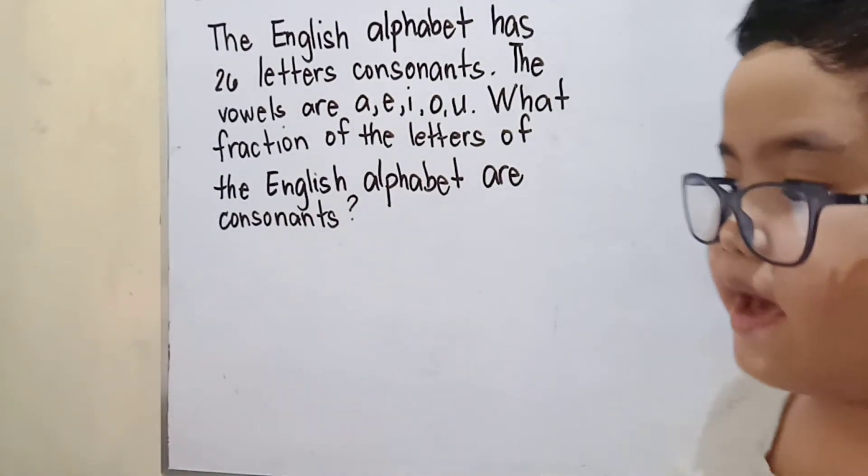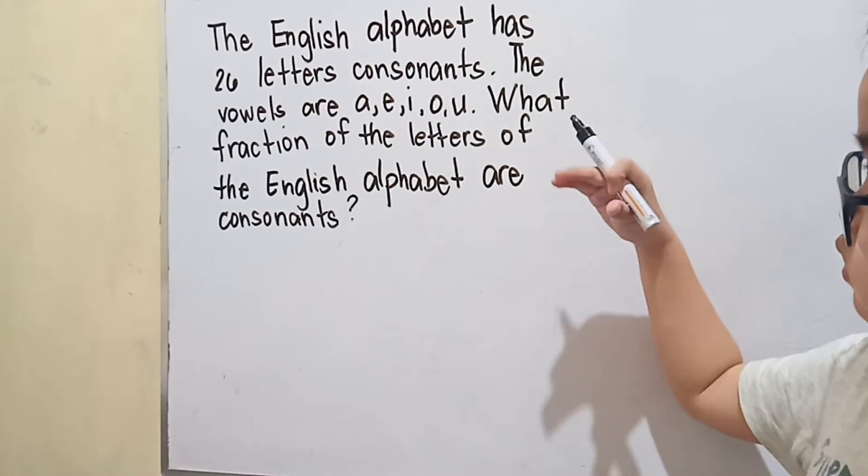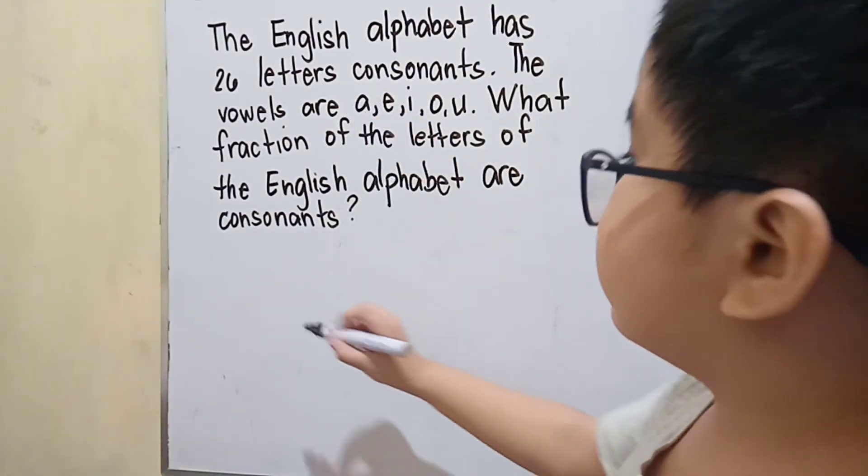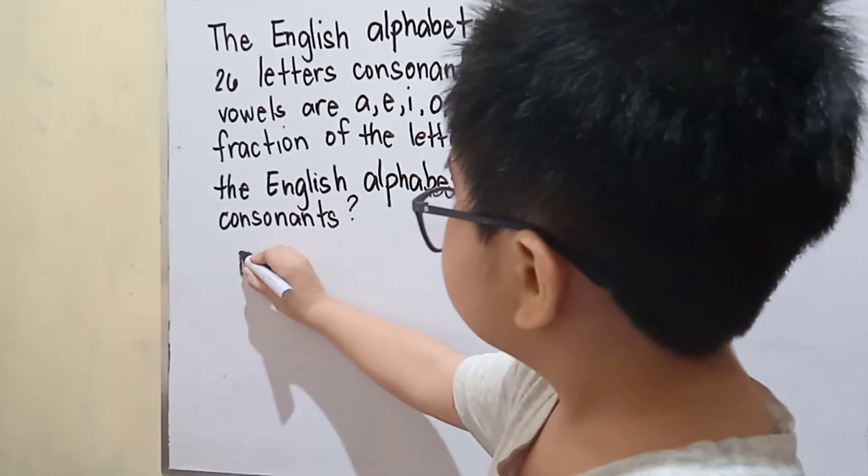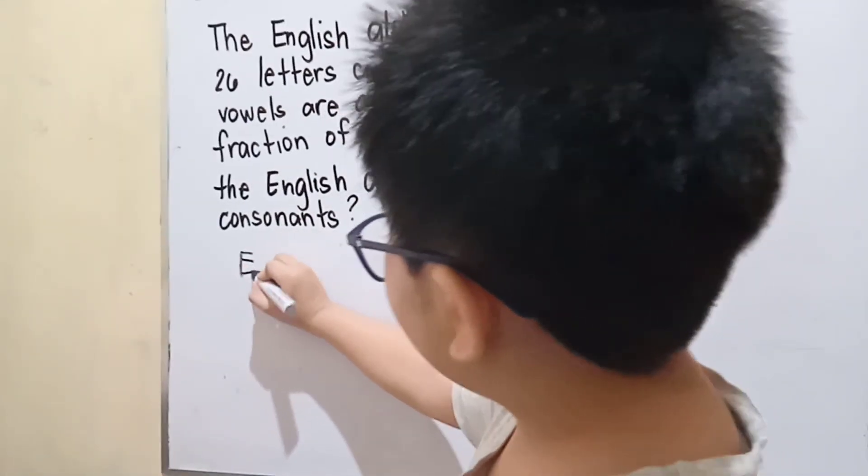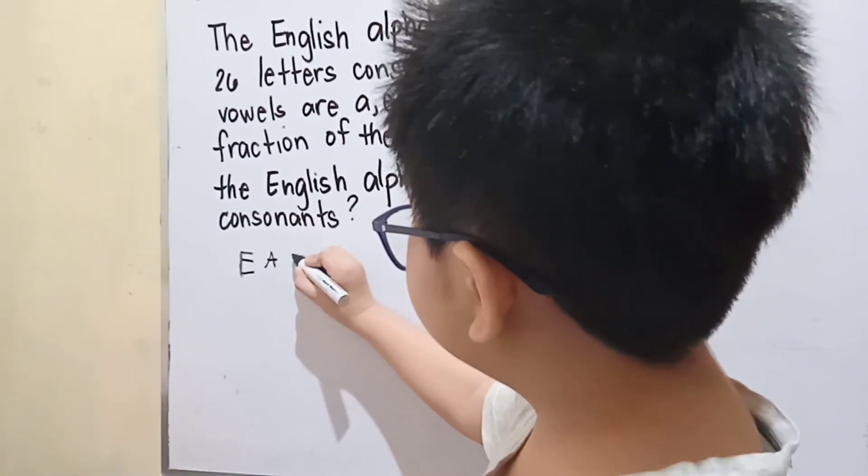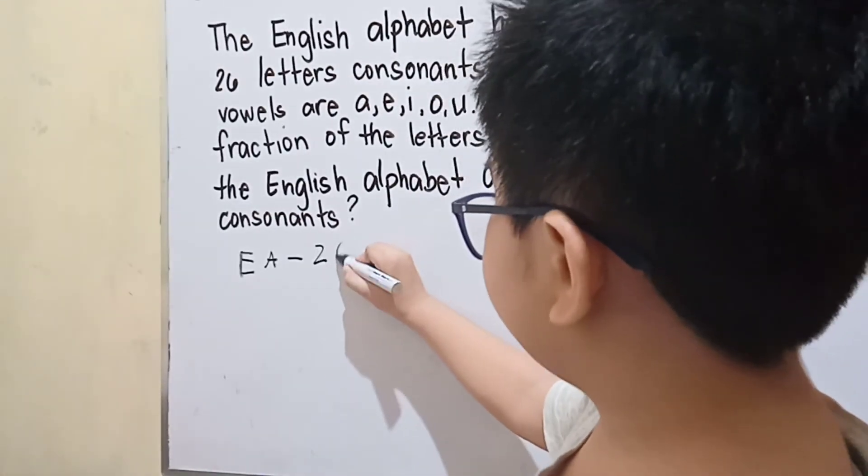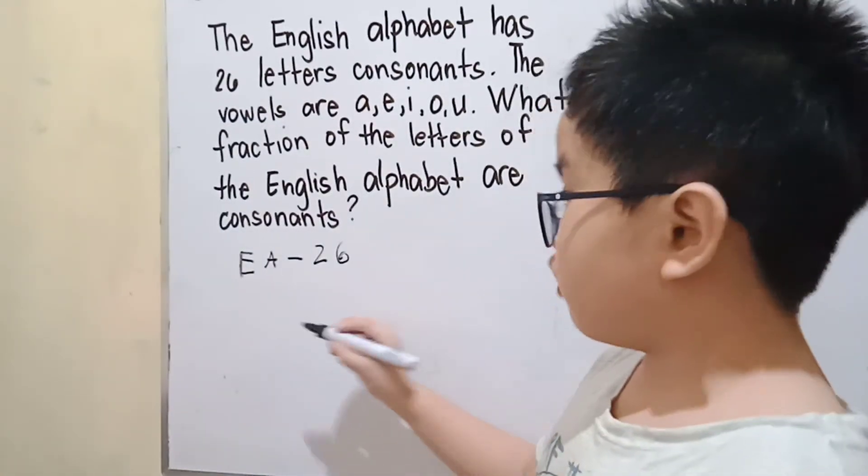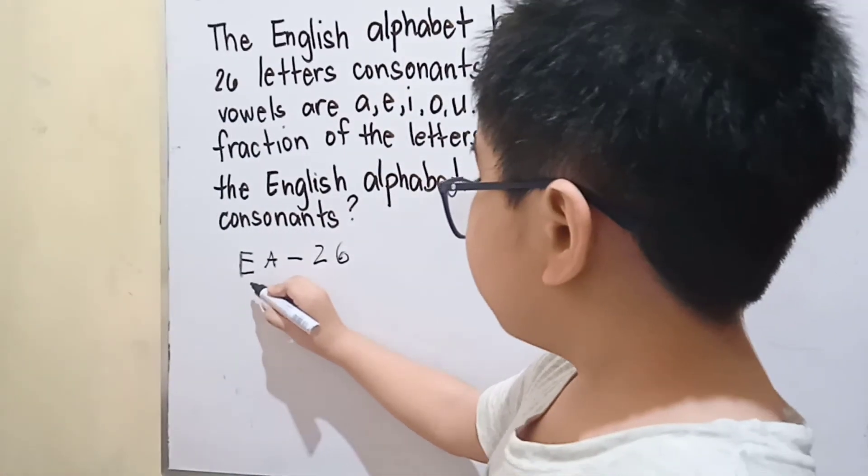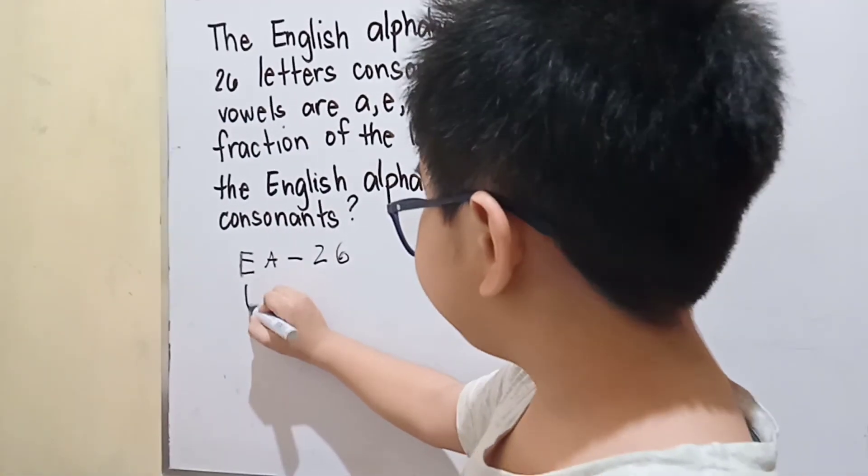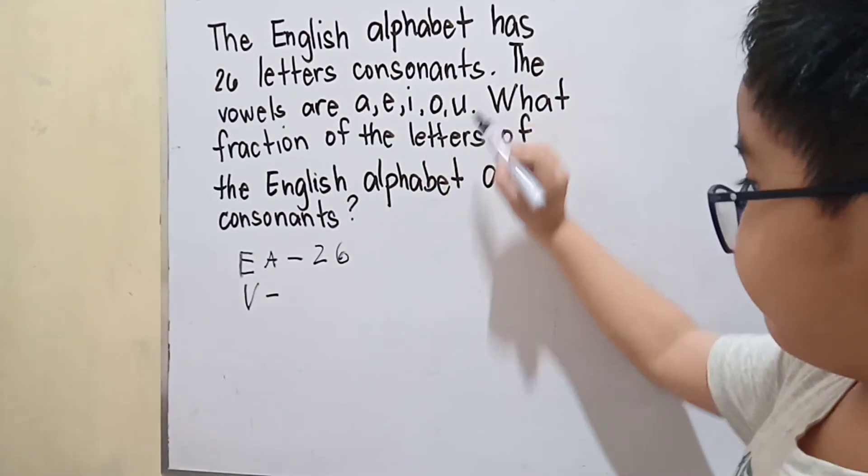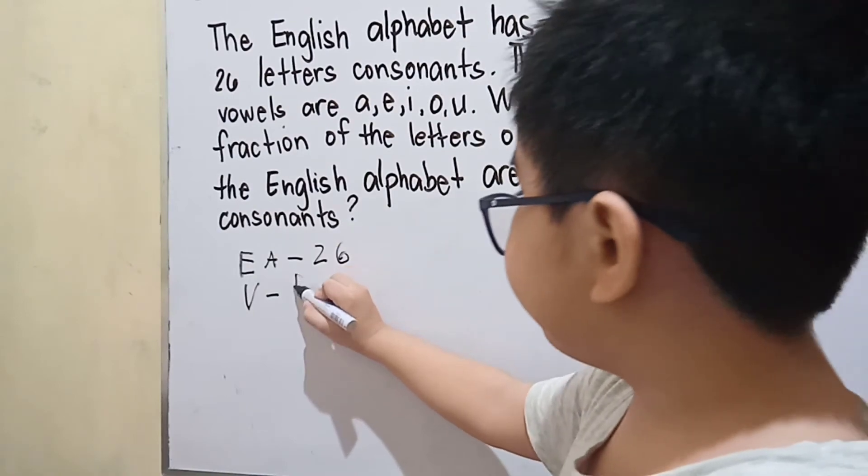To solve this problem, let me write the number of letters in the English alphabet. The English alphabet has 26 letters. Let us also know how many vowels we have. So, 1, 2, 3, 4, 5. We have 5 vowels.